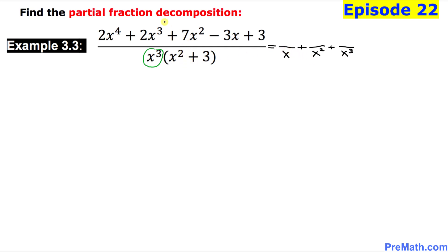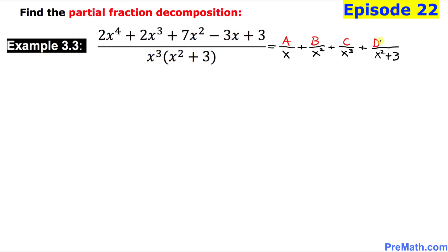We are going to focus on the other factor, which is the quadratic one. Since this is only one factor, we will have just one more fraction with denominator x squared plus 3. For the numerators: the first fraction gets constant a, the second gets constant b, the third gets constant c, and the fourth fraction — being quadratic — gets d times x plus e.